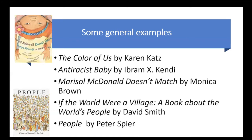If the World Were a Village collapses the seven-plus billion people in the world to a village of a hundred. It looks at how many people would speak Chinese, Hindi, English, etc., how many would be able to read and write, how many would have fresh water. It helps the reader put information into perspective and see what Americans may take for granted or erroneously assume about others.